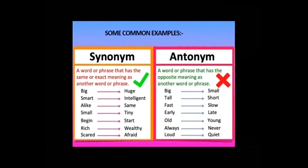Let's look at some common examples of synonyms. A word or phrase that has the same or exact meaning as another word or phrase. For example: big — huge. We can say 'elephant is big' or 'elephant is huge,' even 'elephant is massive' or 'elephant is large.' These are all synonyms. Then we have smart — he is very smart, he is very intelligent. We can also use 'clever' — he is very clever — though clever can also mean intelligent.